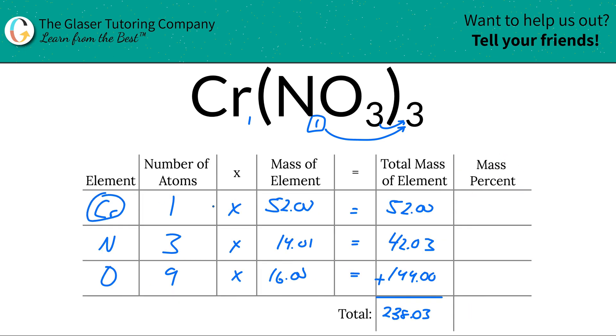So now to find the mass percent of chromium, all we have to simply do is take the total mass of the chromium, divide it by the total mass of the compound. Look at how organized this is. It's so nice and simple now. Take that and divide it by the total mass, 238. That's a 52, by the way. 238.03.